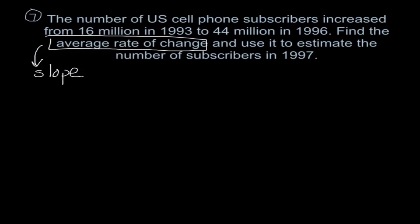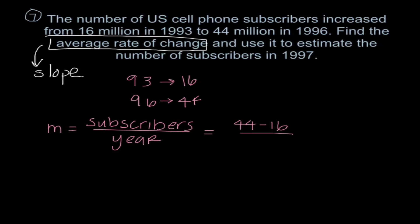So the first thing that I'm going to look for is do we have ordered pairs? Because that's really what I need to find a slope. And I notice that we have 93, 16 million in 96 was 44 million. So I'm going to use those really as our ordered pairs. To find the slope, we would say subscribers per year. So I'm going to go ahead, and since these are in millions, I'm just going to keep it 44 minus 16 and know that our final answer is going to be in millions over 1996 minus 1993. And once again, if you added the 19, I would end up with the same output, so it doesn't matter. And I get 28 over 3.